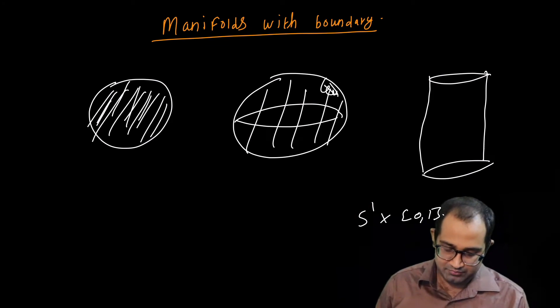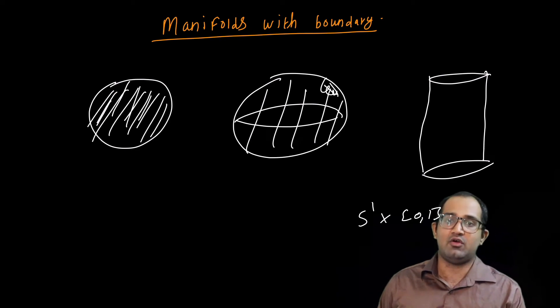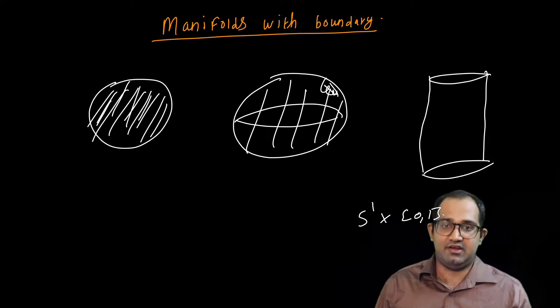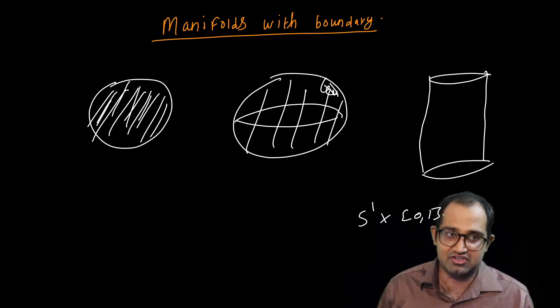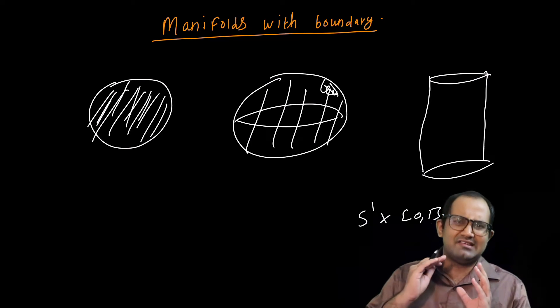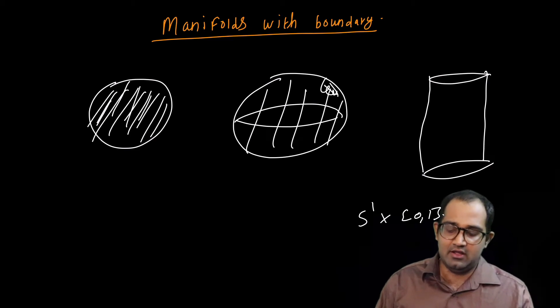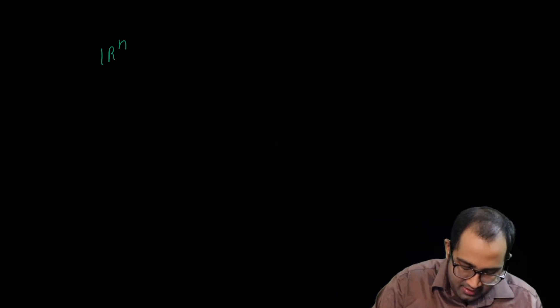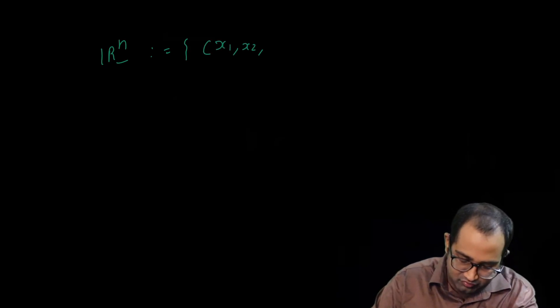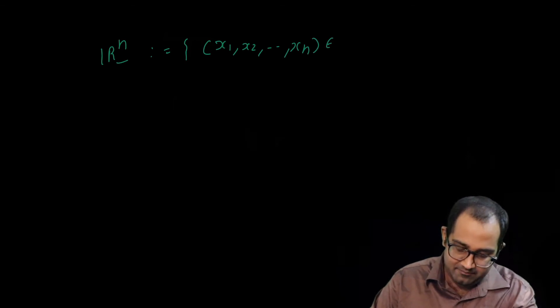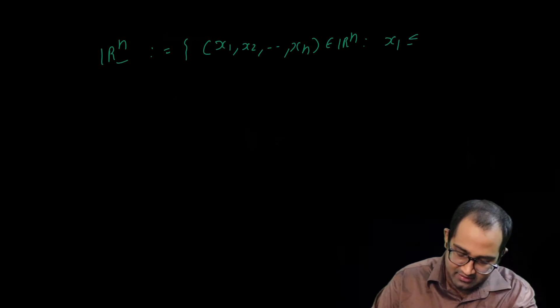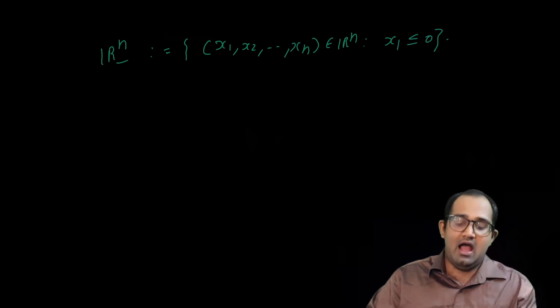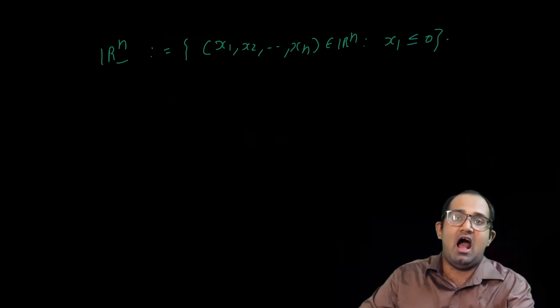Let us see how we can capture this notion of a manifold with boundary using the technology we have developed so far. The definition is straightforward. You just take the local parameterization definition — that is, definition 3 in the definition of a manifold — except now you allow that open set to be not just an open set in Rn but an open set in the lower half plane. I am going to define the object Rn minus, which is by definition those points x1, x2, ..., xn in Rn such that x1 is less than or equal to 0. So I am considering the lower portion of Rn.